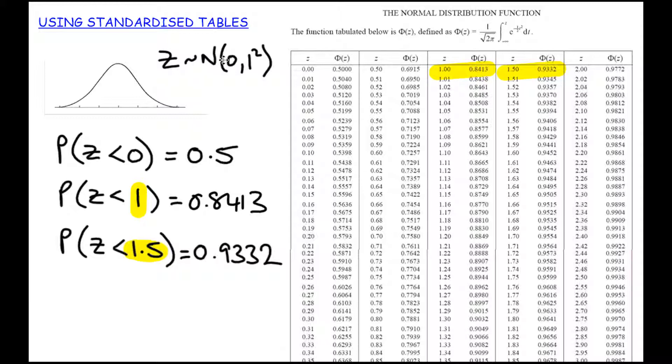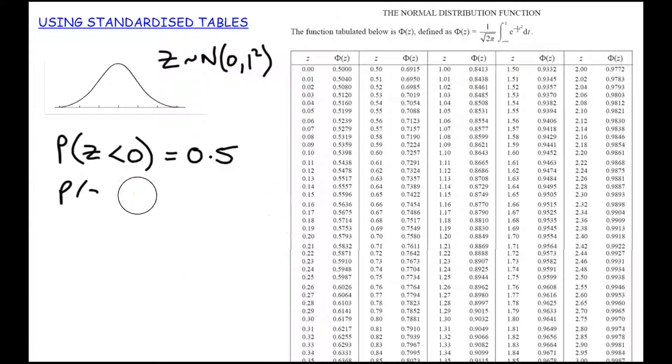It does go a little bit further than that, and here we're going to bring in back one of our properties of the normal distribution, which was symmetry. These tables are only going to tell me less than or equal to a particular Z score. What if I wanted to know greater than a particular Z score? So the probability Z is greater than 1. On the diagram, I'm looking for this region shaded here. I can't look that up directly in the tables.